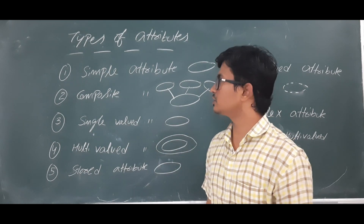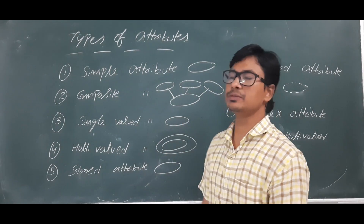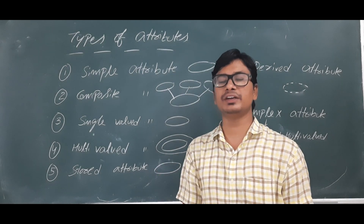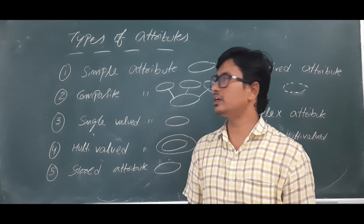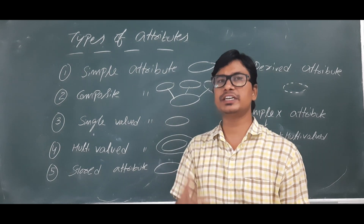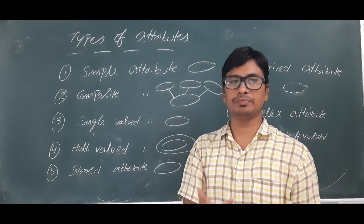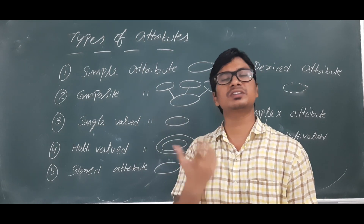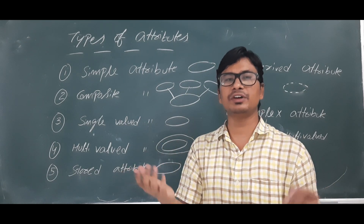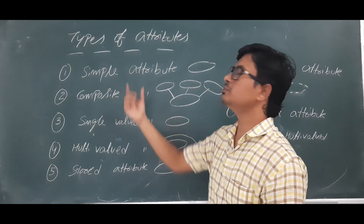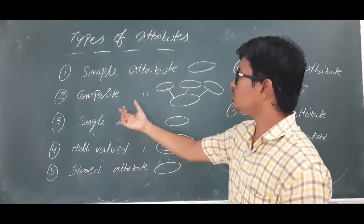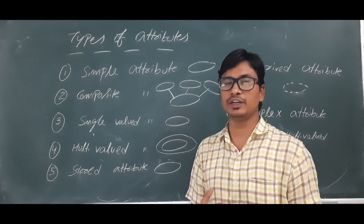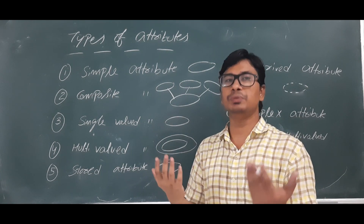First we have the simple attribute. A simple attribute is one which cannot be further divided. The best example is your first name. For instance, my first name is 'Katarla' — that cannot be further divided, so we call it a simple attribute.